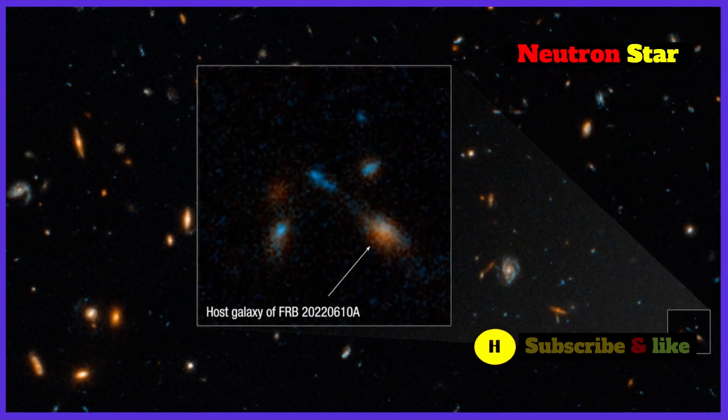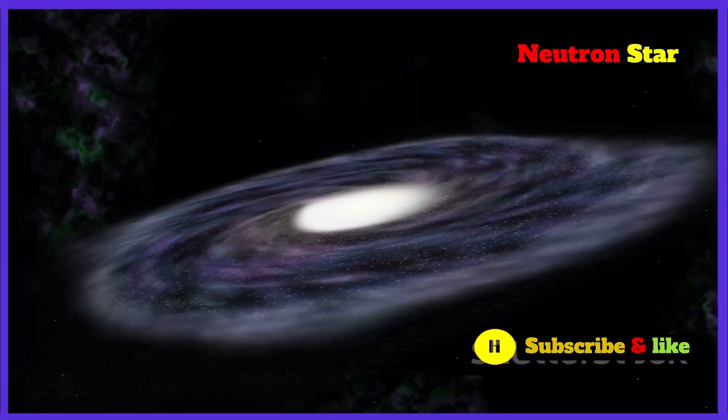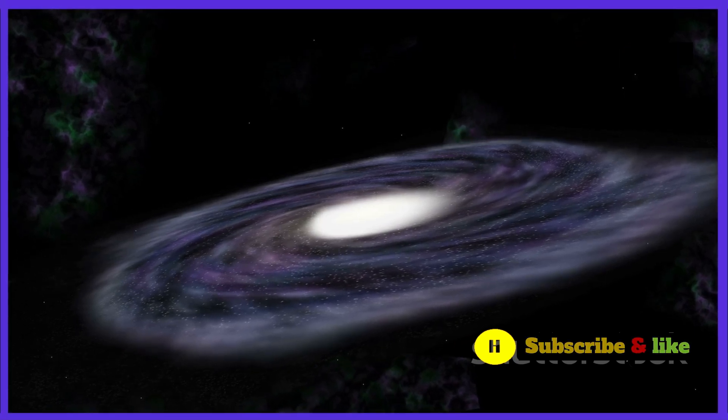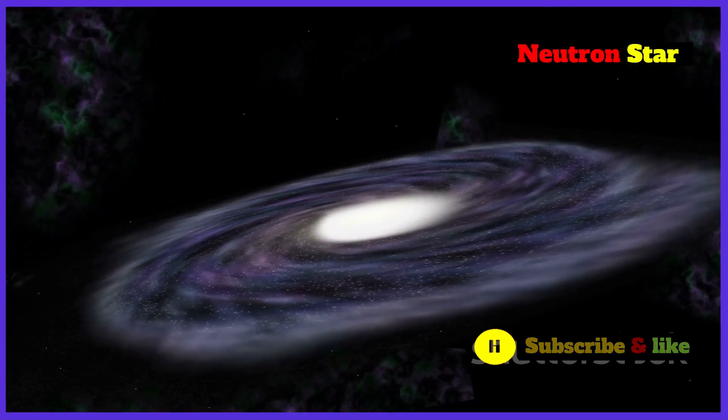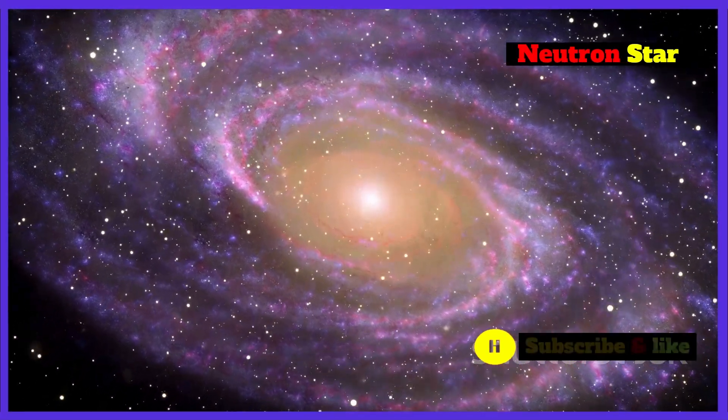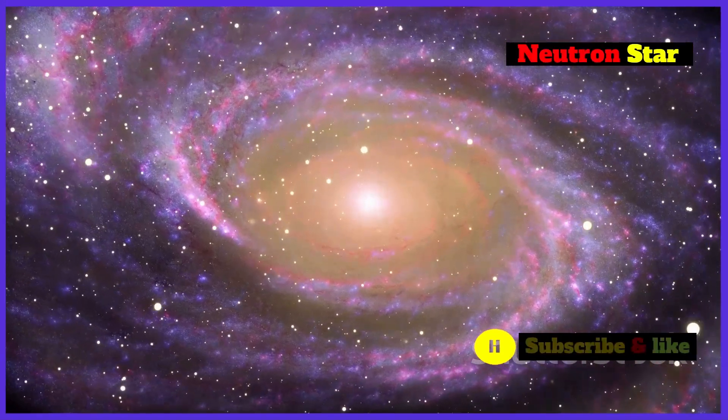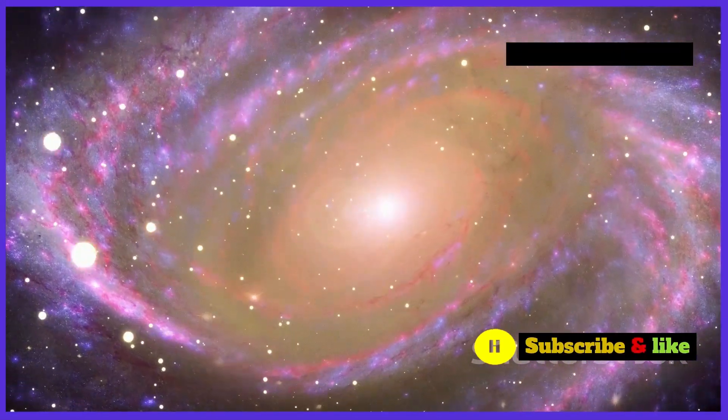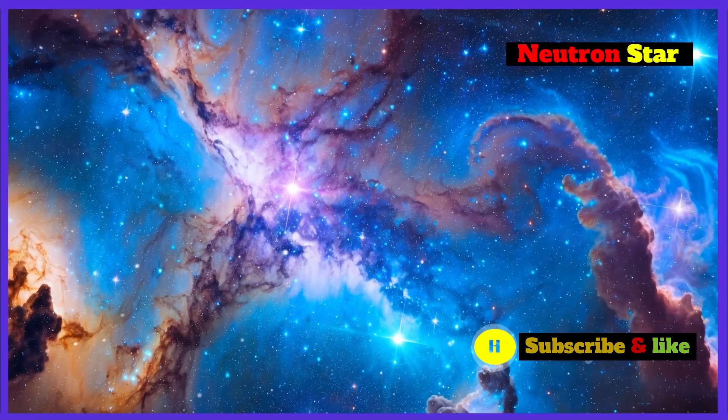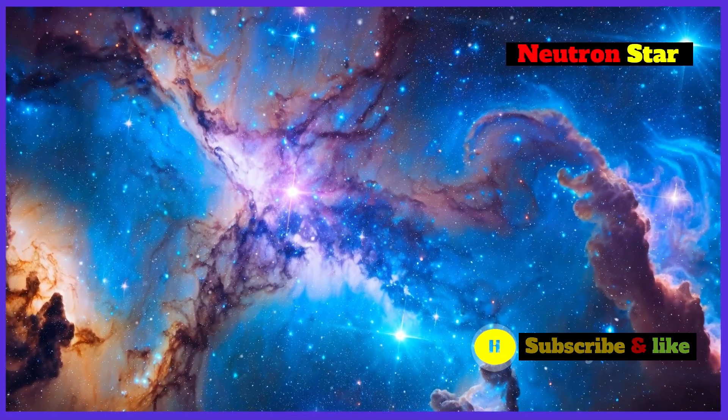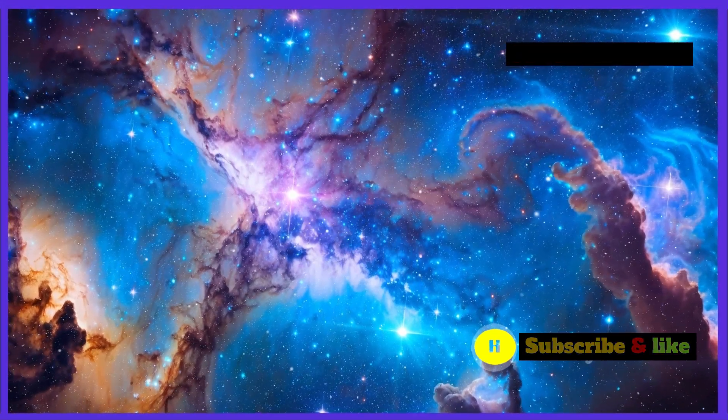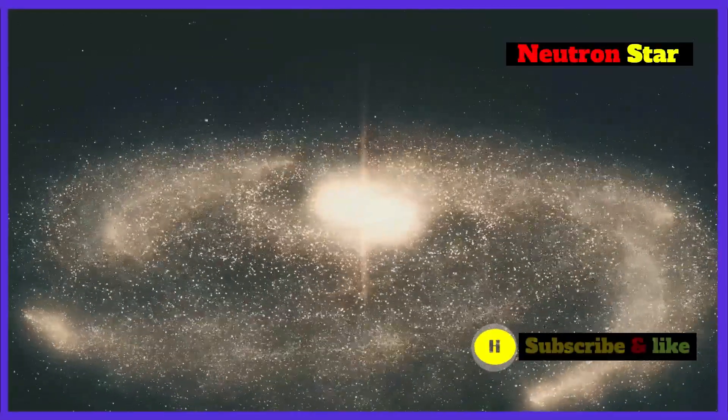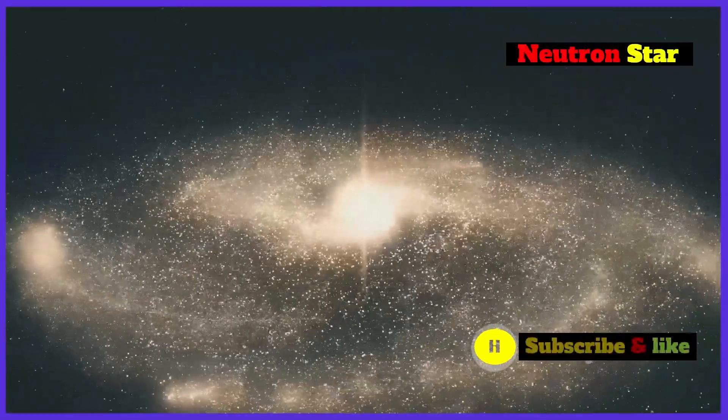This FRB, located in a dwarf galaxy 3 billion light-years away, provided crucial clues about the environments where FRBs originate. The discovery suggested that such bursts could come from a variety of cosmic settings, not just from within our own galaxy. Another important finding was the detection of an FRB within our own Milky Way galaxy. This was a monumental discovery because it allowed scientists to study an FRB source up close, something that was previously thought to be nearly impossible. This event, associated with a known magnetar, provided strong evidence that magnetars are indeed capable of producing at least some FRBs. Magnetars are a type of neutron star with extremely powerful magnetic fields, and this connection has helped to narrow down the list of potential FRB sources.